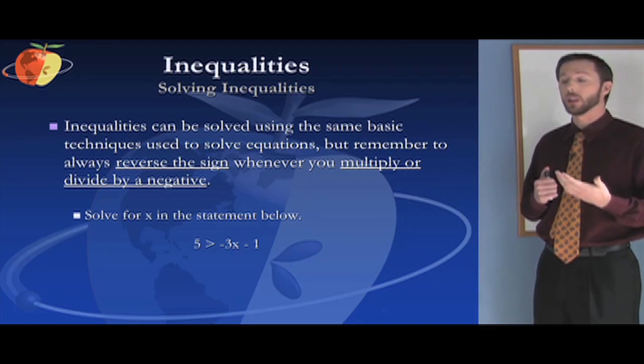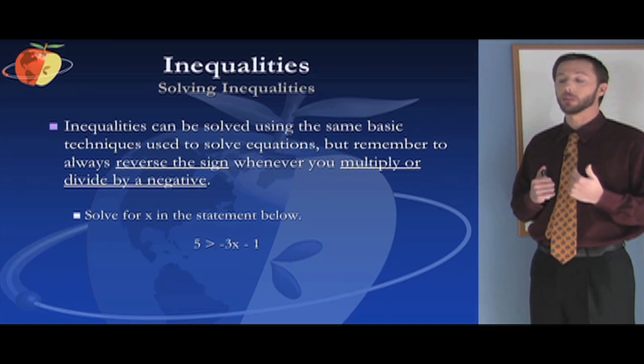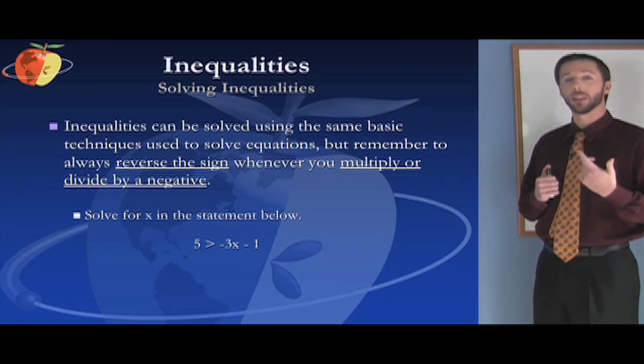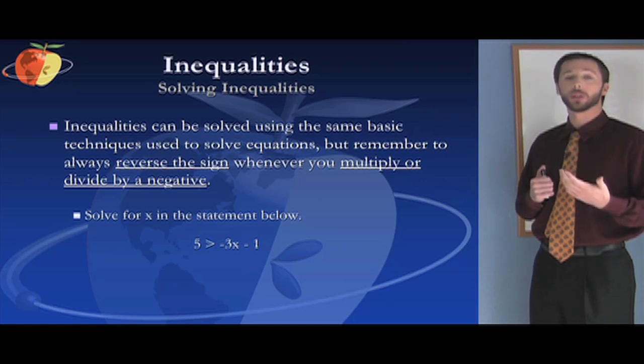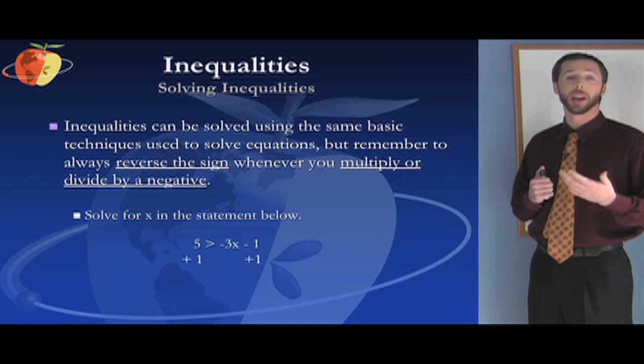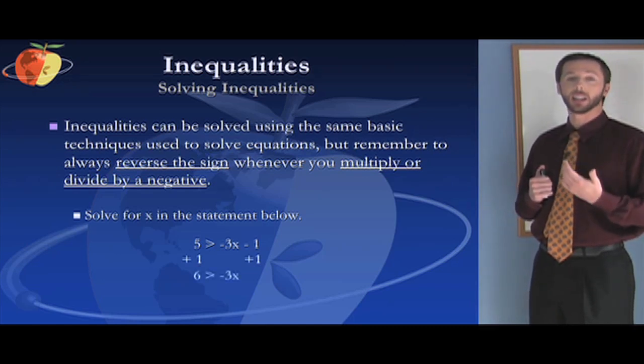So let's look at an example. Here it says, solve for x in the statement below: 5 is greater than negative 3x minus 1. So the first thing we'd do if this was a regular equation is add 1 to both sides and that gets rid of the minus 1. So now we have 6 is greater than negative 3x.